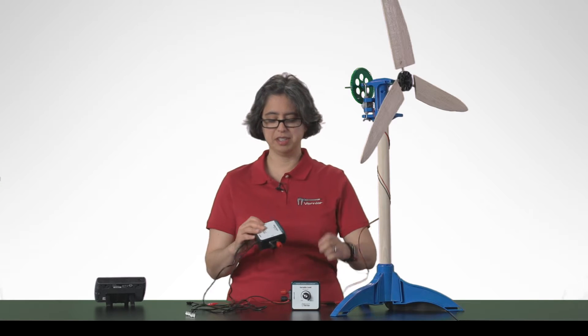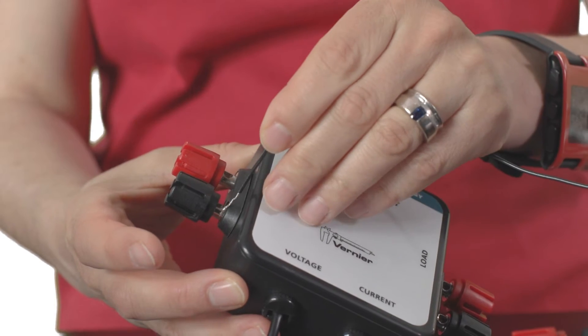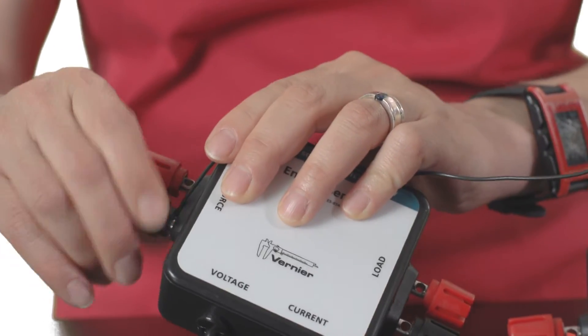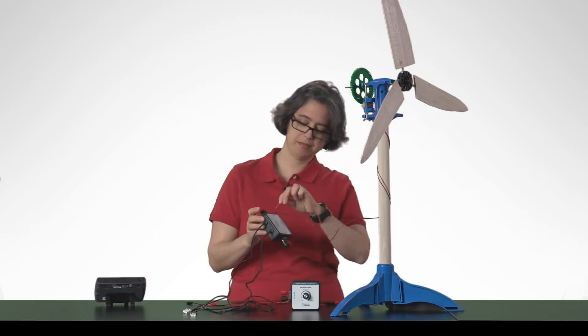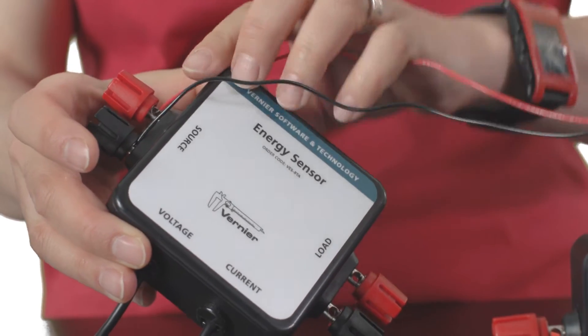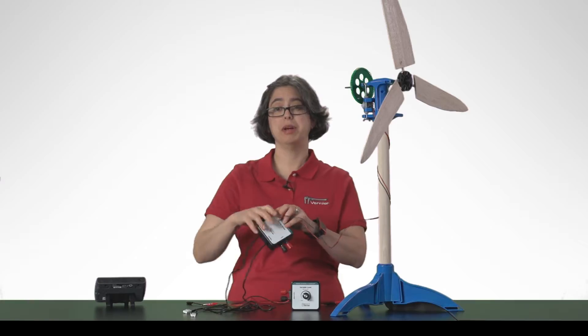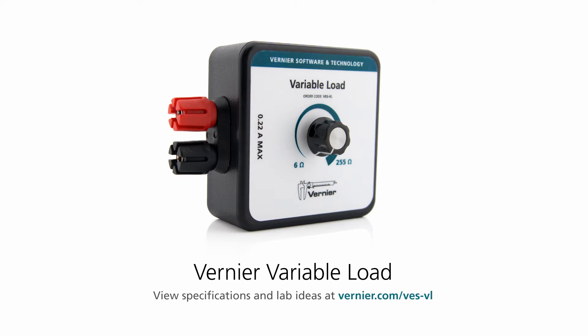For my source of electrical energy today, I'm going to use our KIDWIND Advanced Experiment Kit, so I'm going to connect that over on the source side. For my load, I'm going to use the Vernier variable load.